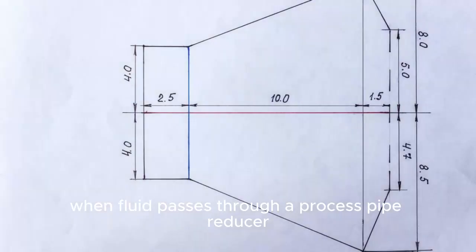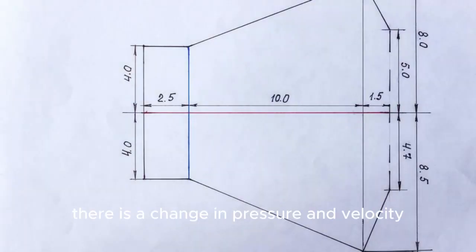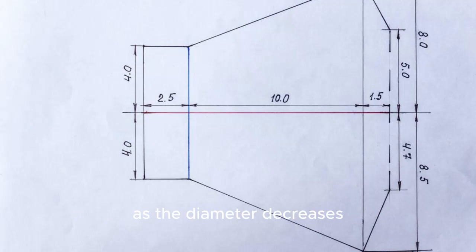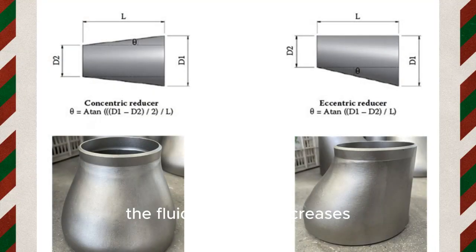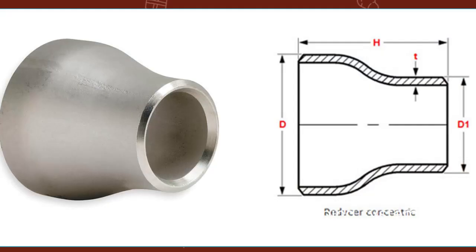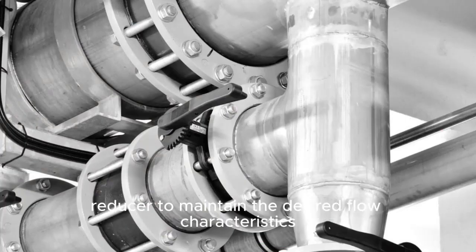When fluid passes through a process pipe reducer, there is a change in pressure and velocity. As the diameter decreases, the fluid's velocity increases, leading to higher pressure. Understanding this impact is crucial in designing a piping system and selecting the appropriate pipe reducer to maintain the desired flow characteristics.